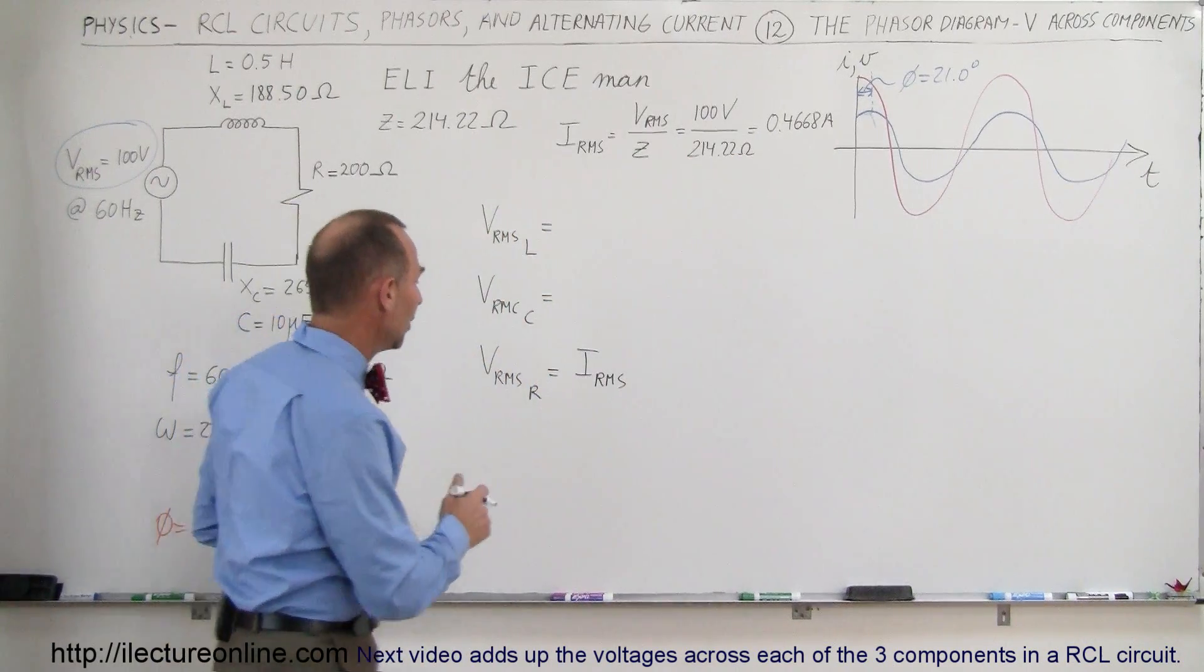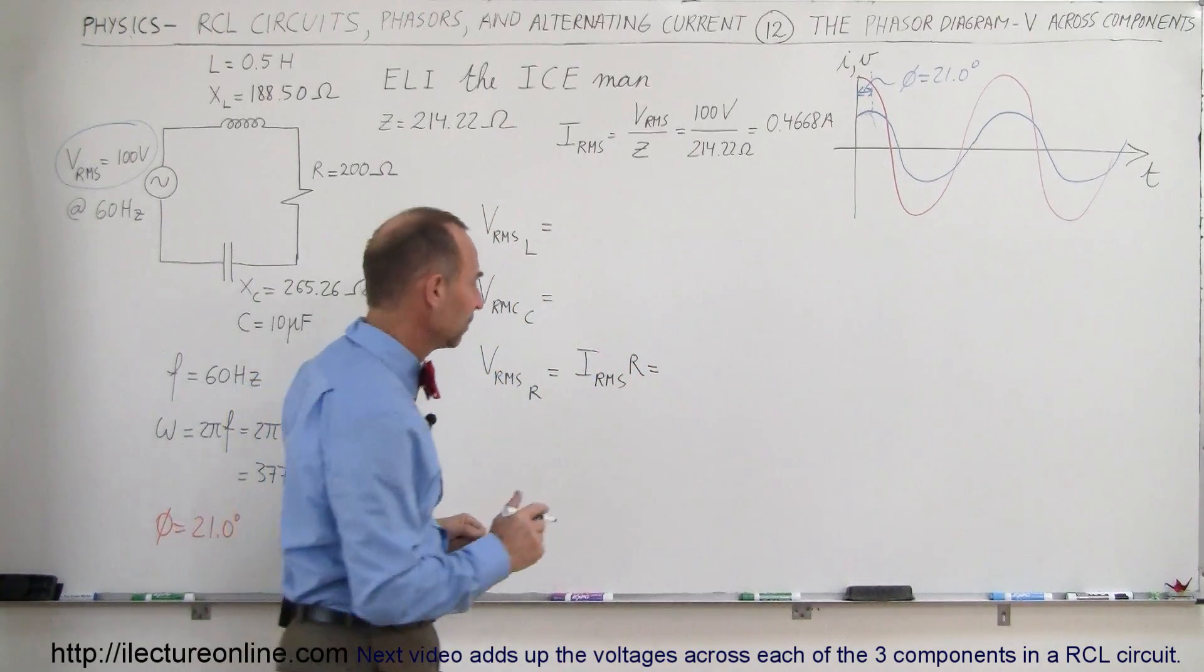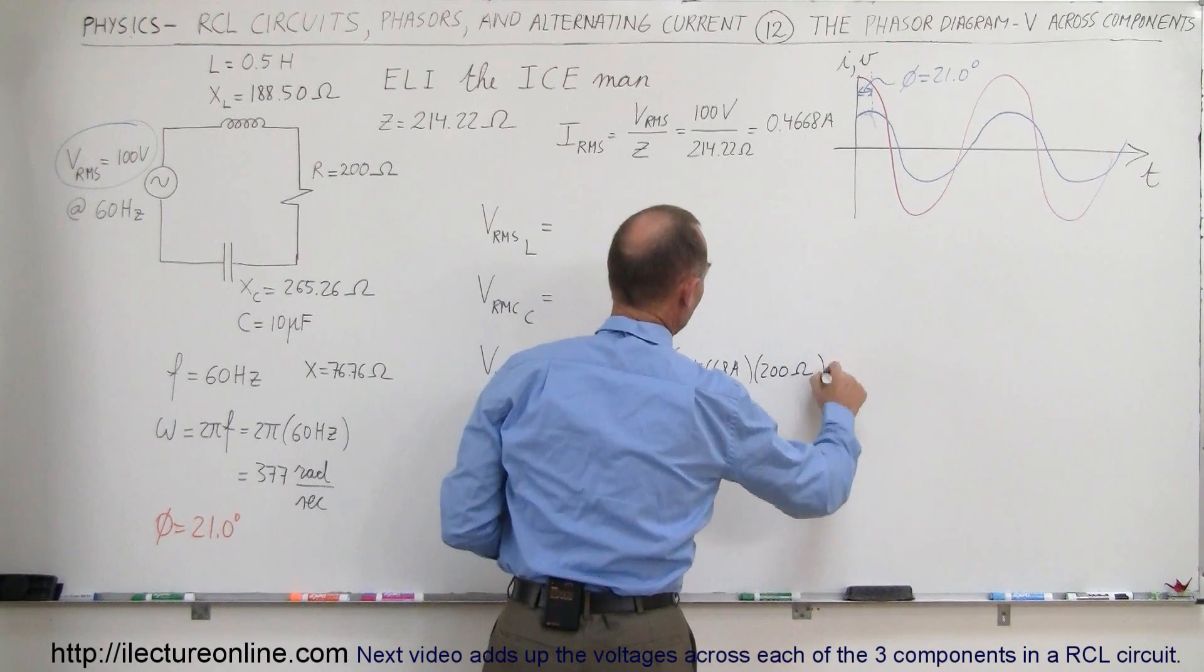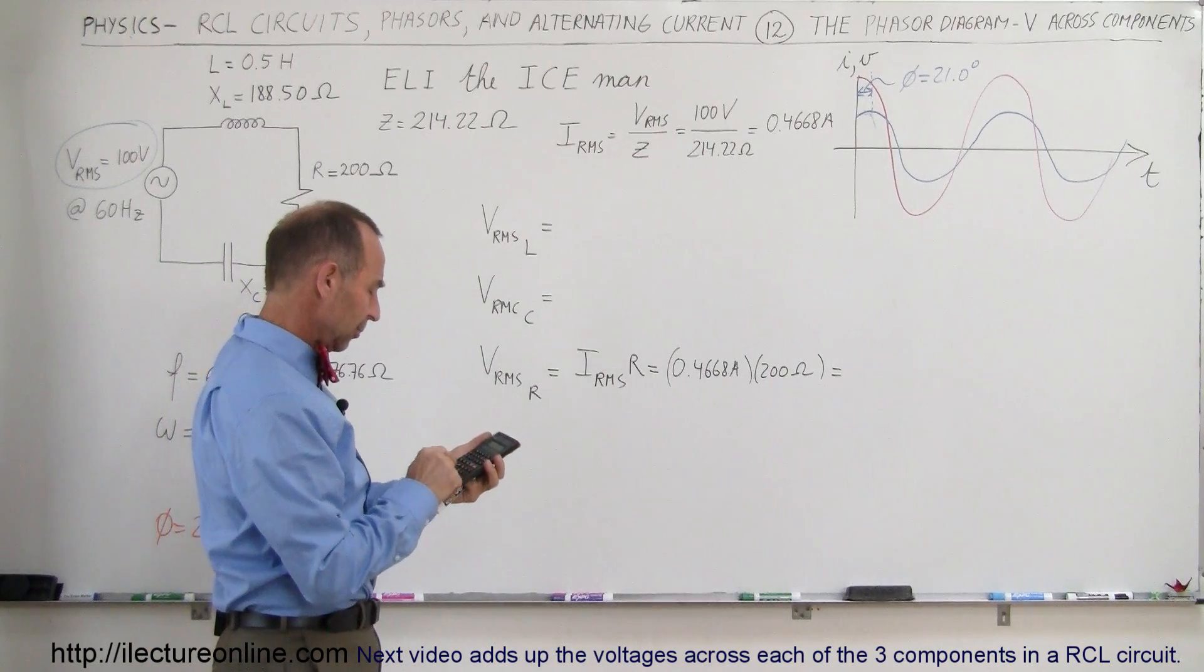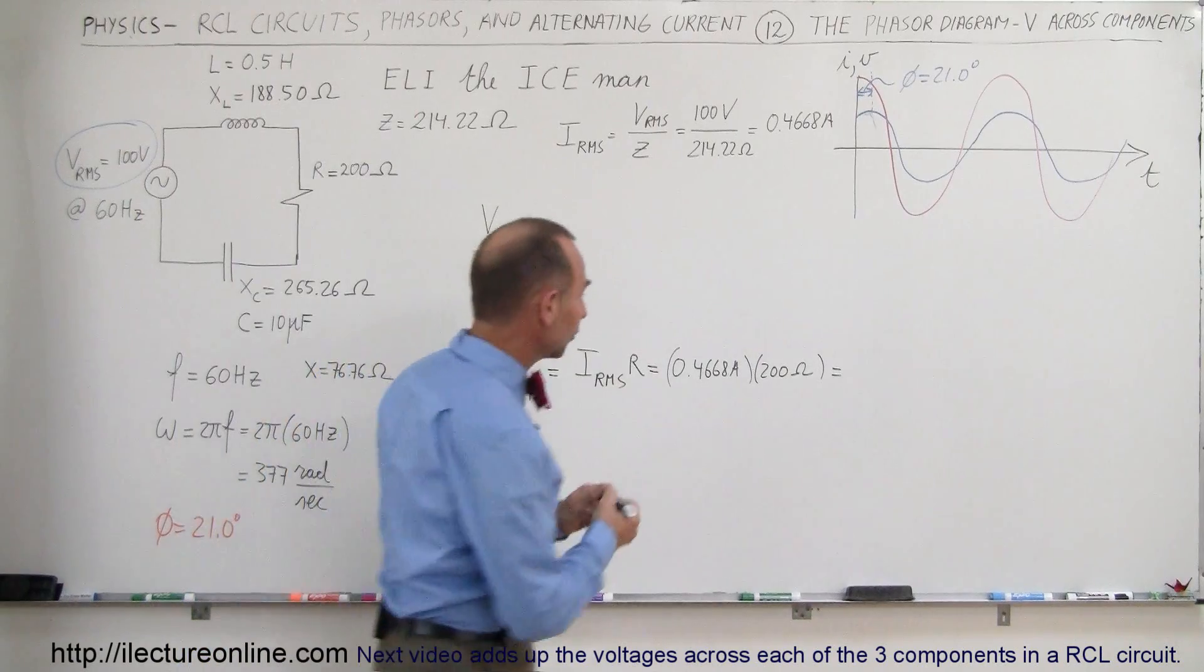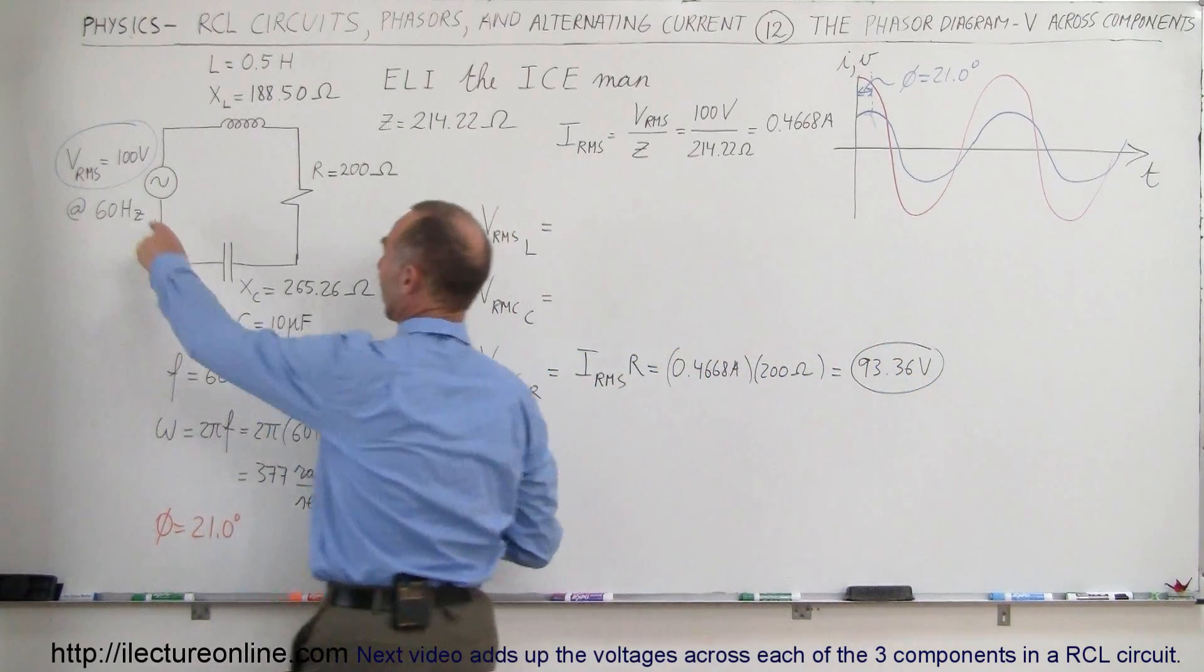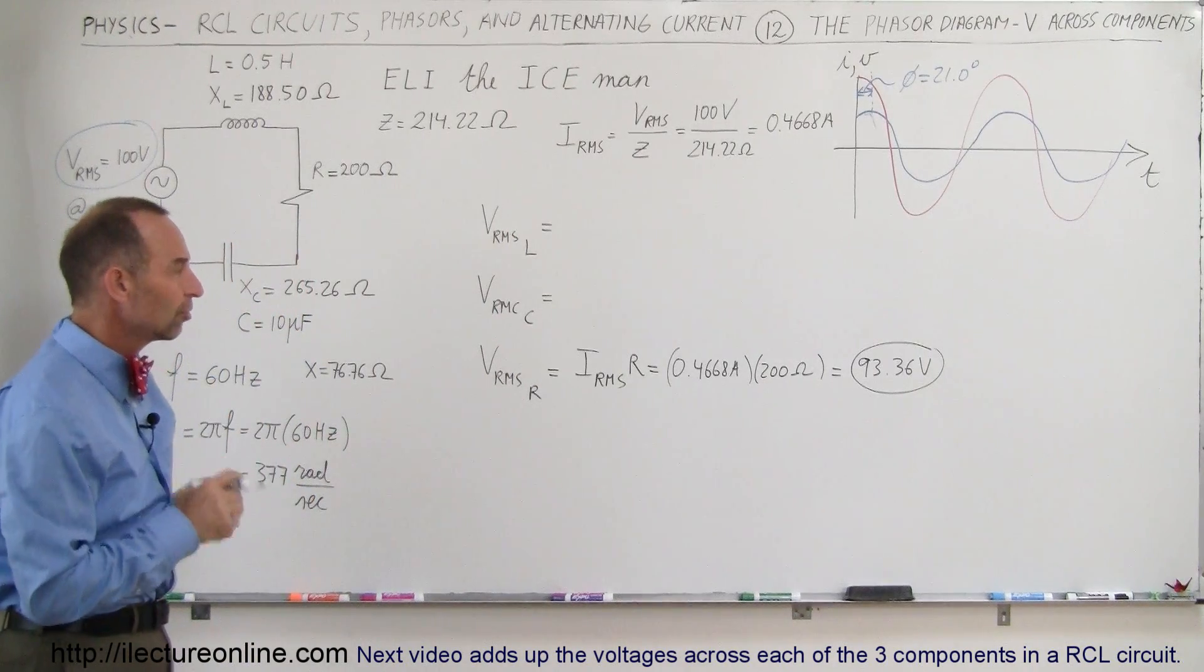So we take the current and multiply times the resistance, which gives us the voltage drop across the resistor. This would be 0.4668 amps times the resistor of 200 ohms. So times 200, and we get 93.36 volts. Notice that is not exactly equal to the total, but that's all right. That would be the RMS voltage, the average voltage across the resistor.